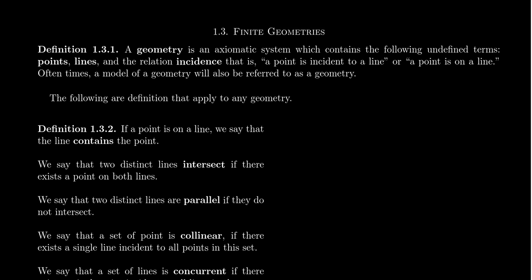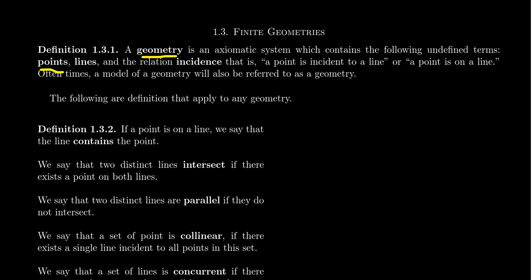When we talk about a geometry, a geometry is an axiomatic system which contains, among other things, the following three undefined terms. We have some notion of what a point is, some notion of what a line is, and then there should be a relationship between points and lines that we call incidence. So we'd say something like a point is incident to a line, or a point is on a line. A geometry is some type of axiomatic system that says something about points and lines.